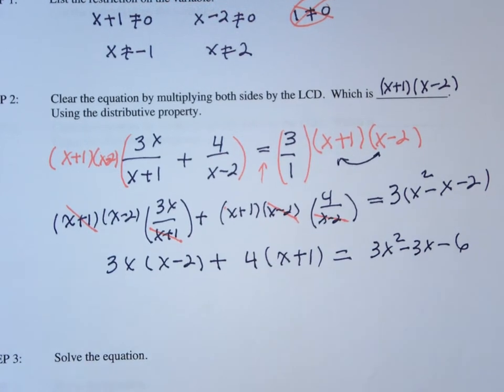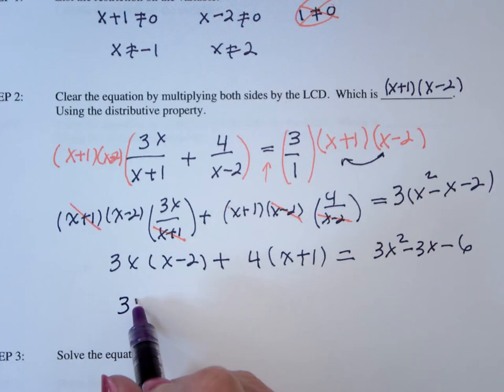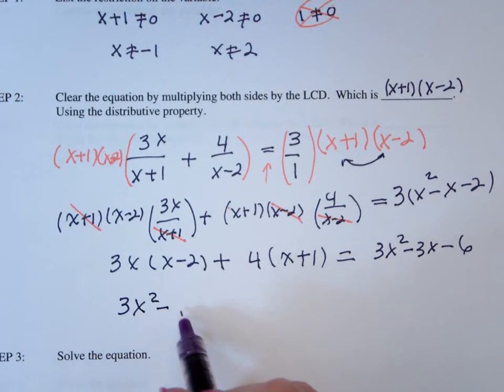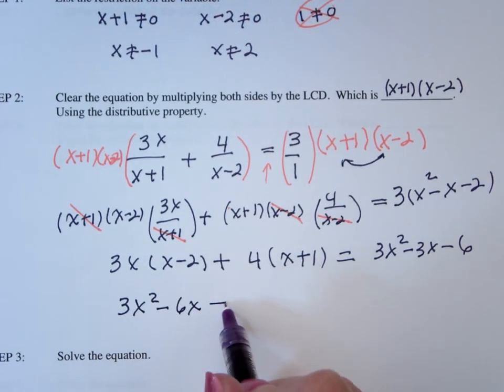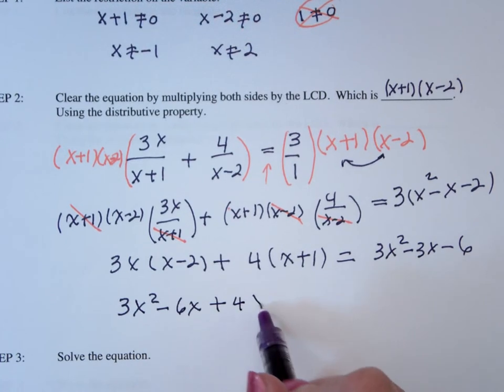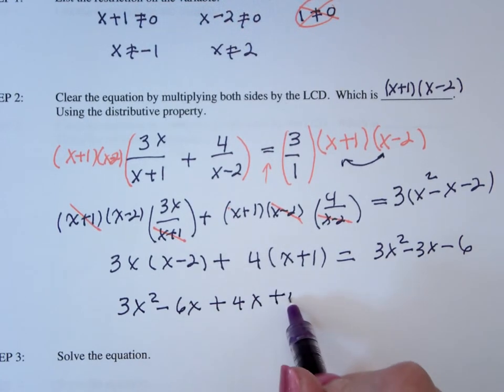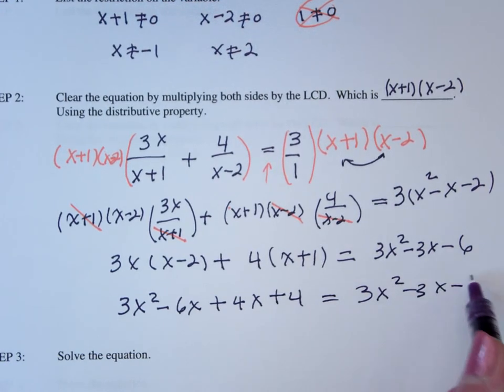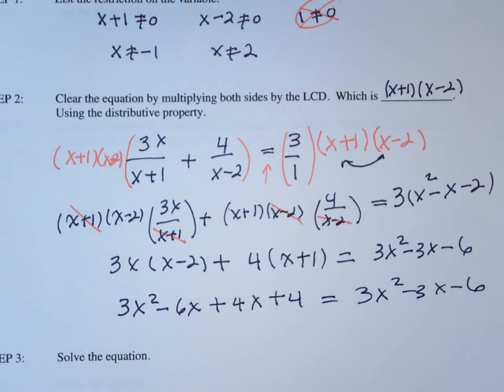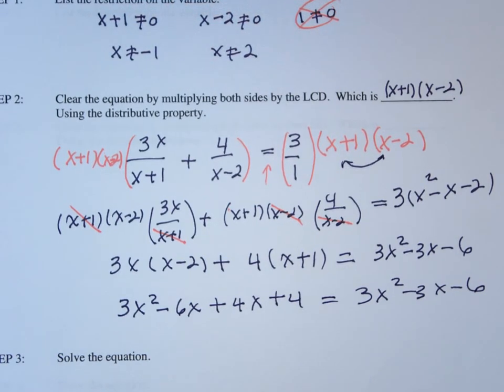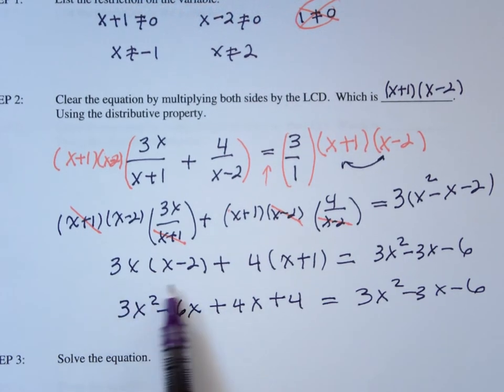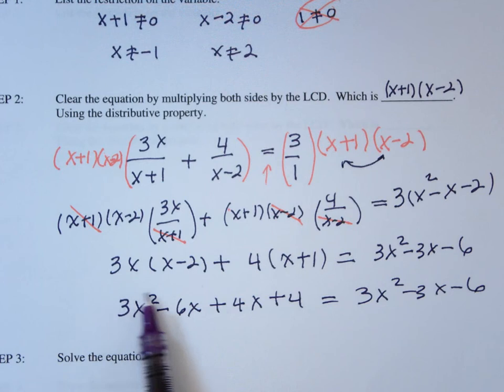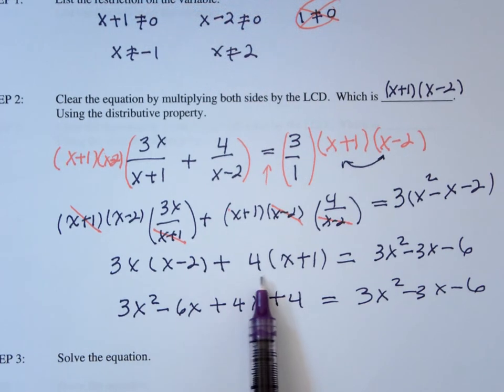Remove parentheses, I get 3x squared minus 6x plus 4x plus 4 equals 3x squared minus 3x minus 6. Now, I'm getting down to solve the equation. Yes, I remove parentheses by multiplying the first by 3x and then the second by 4.